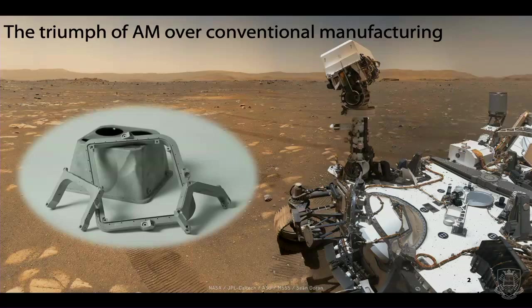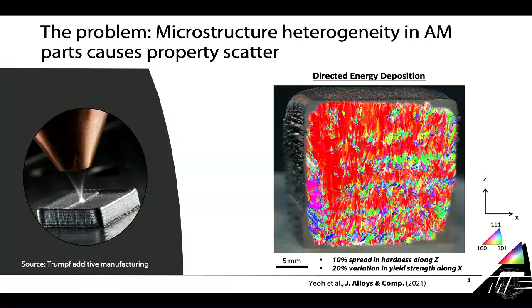Despite the successful stories and the fame that this technology has, the applications that currently rely on parts produced by additive processes are scarce and typically restricted to industries with large capital, such as aerospace. One of the main reasons is that additive processes are inherently variable - there is some intrinsic variability in the additive process. This variability translates into parts with variable mechanical performance. Here we have a prototypical example: a block of Inconel 718, a nickel-based superalloy extensively used in aerospace, produced by Directed Energy Deposition, or DED.